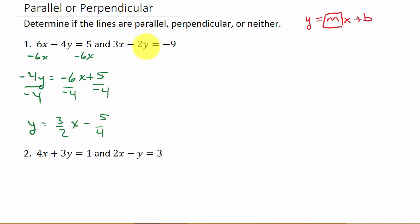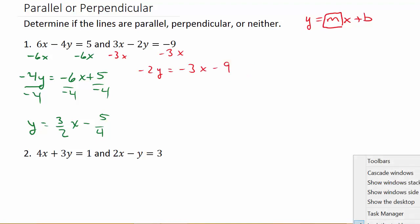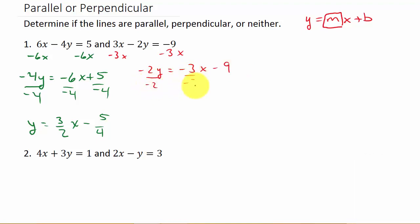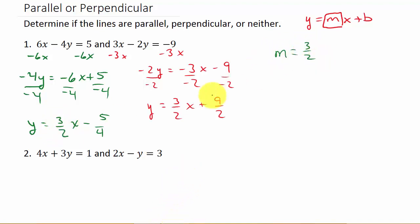Now let's take the second equation. I'll subtract 3x from both sides, giving me negative 2y equals negative 3x minus 9. Then I divide each term by negative 2, and I get y equals 3 halves x plus 9 halves. So the slope of the first line is 3 halves, and the slope of the second line is also 3 halves — they're the same, so these lines are parallel.